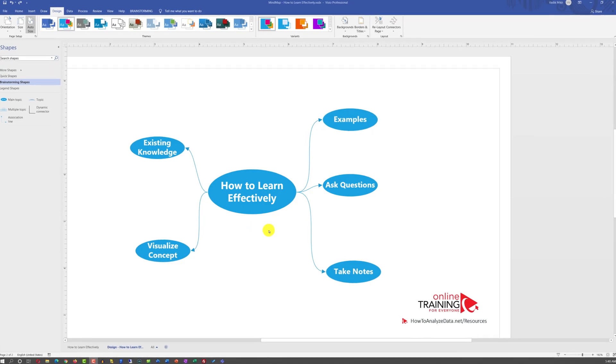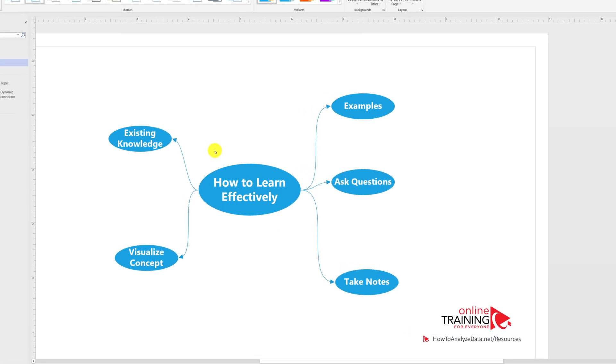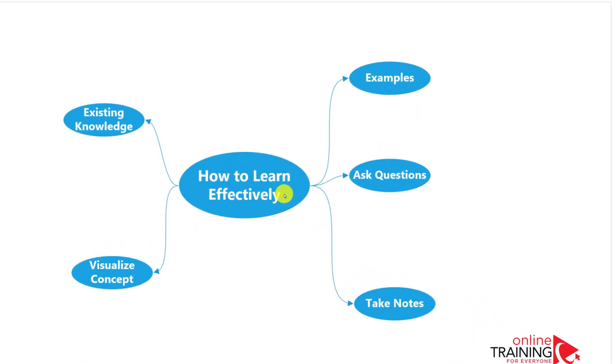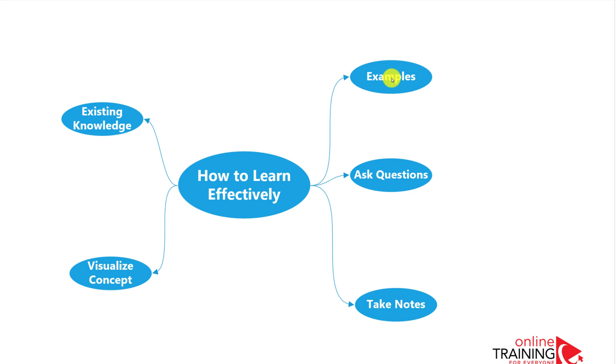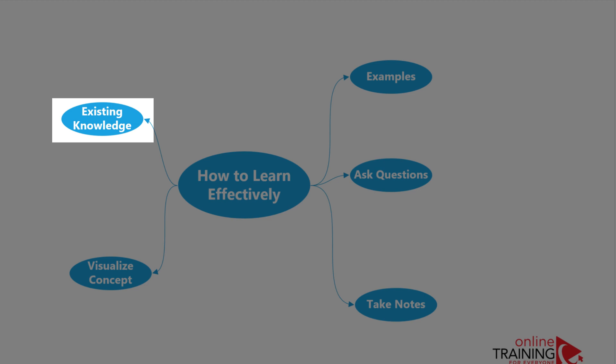Similar to the way items are represented in the mind mapping diagram, our brain activates and fires neurons to connect the ideas and recall the information. For example, when you start thinking, how can I learn more effectively,